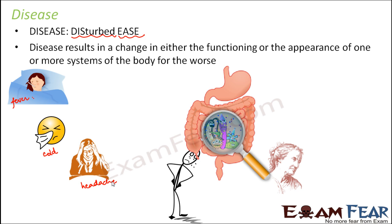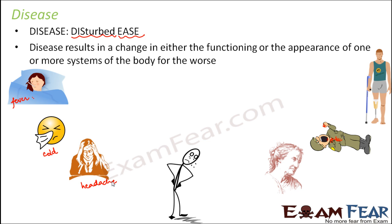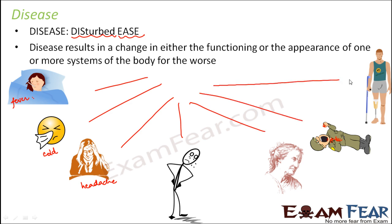These things make you feel uncomfortable. You might have had some accident causing injury or structural changes — like breaking your hand or leg — and those also make you feel uncomfortable. Whenever things make you uncomfortable, you are not at ease, and that is when you are suffering from a disease. In this lesson, we will talk about the various types of diseases, why each is caused, how they can be treated, and most importantly, how we can prevent these diseases.